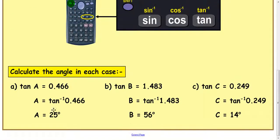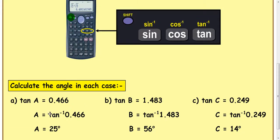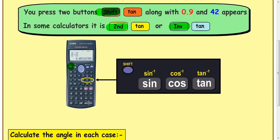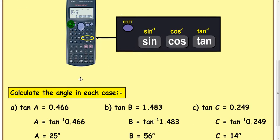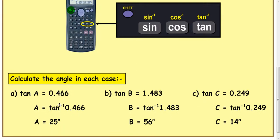Let's practice that. If I wanted to calculate the angle where tan A was 0.466, I would do inverse tan of 0.466 and 25 degrees should pop out. Try it now in your calculator — hit shift tan and then the number, or inverse tan of the number, or second function tan of the number. If you inverse tan 1.483, then 56 degrees should pop out. And if you inverse tan 0.249, then 14 degrees appears.